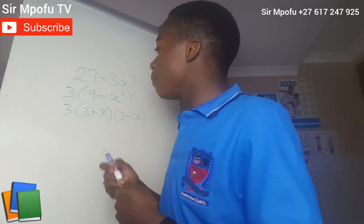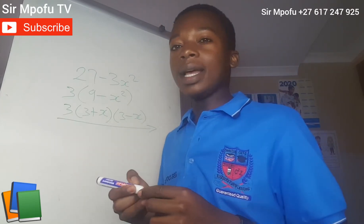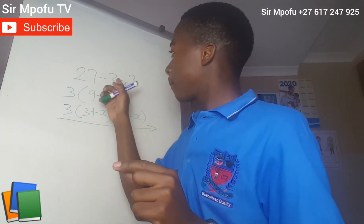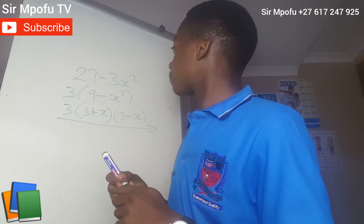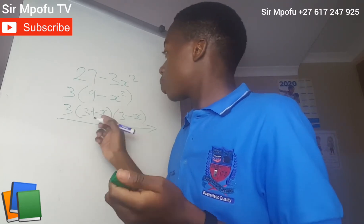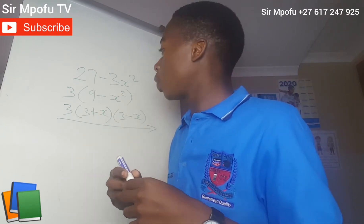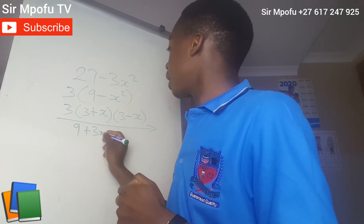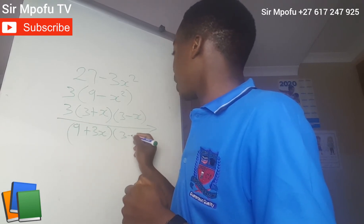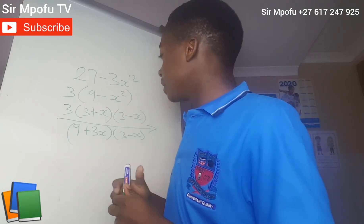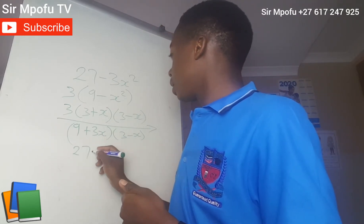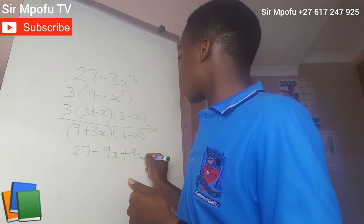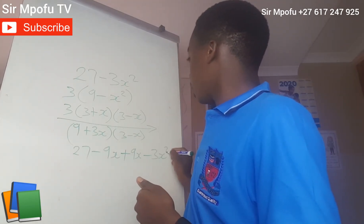As I told you, each and every mathematical question can be proved. Let's prove this one. If we expand it, our answer must be 27 minus 3X squared. Let's expand by multiplying 3(3 + X) first, giving (9 + 3X), then expand that against (3 − X). So: 9 times 3 is 27, 9 times negative X is negative 9X, then positive 3X times 3 is positive 9X, and positive 3X times negative X is negative 3X squared.